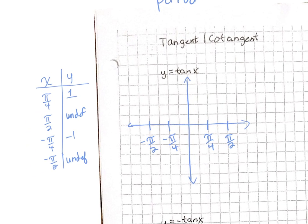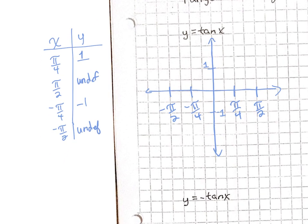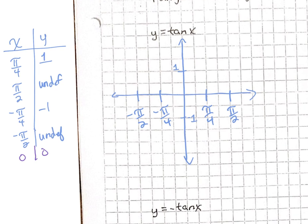From our unit circle, there's one point I didn't ask you to fill in that is also important. What about zero degrees or zero radians? At zero degrees, if we do zero over one, we get zero. So that's an important point. The tangent graph goes right through the origin — that's the other reason why we are looking at this from this perspective.